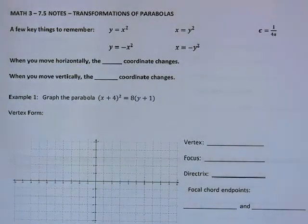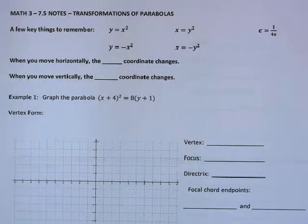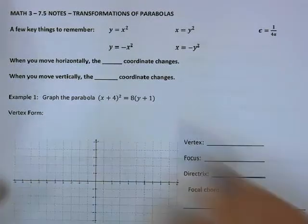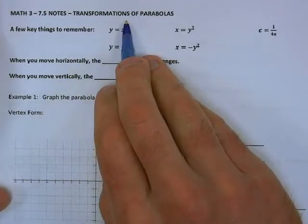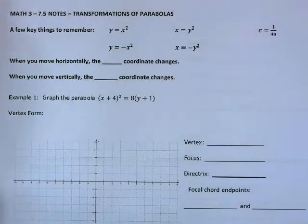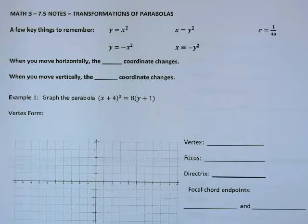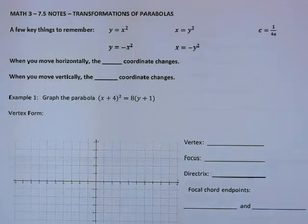Welcome back. Today we have Math 3, Section 7.5 notes: Transformations of Parabolas. This is a fancy way of saying we're going to be shifting our parabolas. In our previous sections, the parabolas all had a vertex at the origin at (0,0). Now we're going to start moving these around.